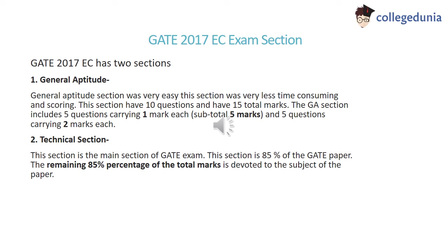Now we will discuss the GATE 2017 Electronics and Communication exam sections. GATE 2017 EC has two sections: General Aptitude and Technical. General Aptitude includes 5 questions carrying 1 mark each and 5 questions carrying 2 marks each.